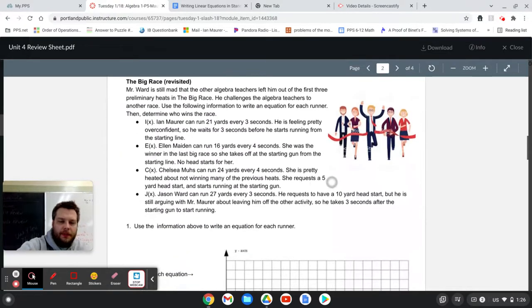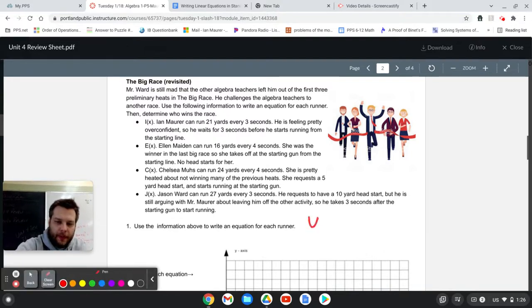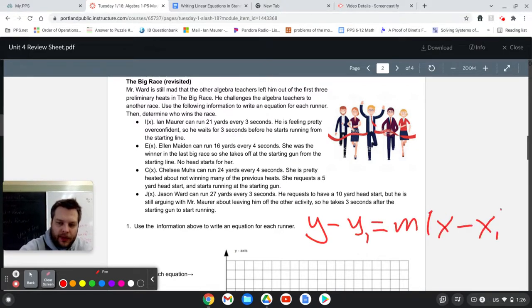This is a big race problem here where you're trying to just represent each character in terms of their speed and head starts or late starts or anything like that. I'm not going to go through the whole problem, but I want you to understand that what we're doing is writing a bunch of point-slope form equations. Point-slope form looks like this. y minus y1 equals m times x minus x1. You can simplify a lot of these equations, but you don't really have to. You can just write the equation given the information.